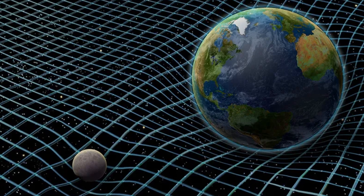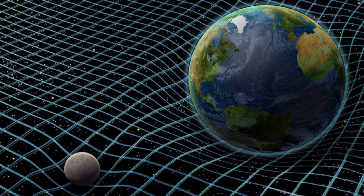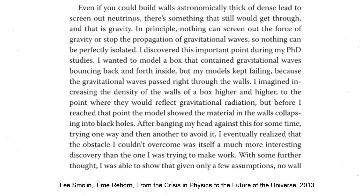There is no experimental evidence for gravitational shielding up to high precision, because large bodies such as the Moon and the Earth would partly shield their own gravitational attraction. During Lee Smolin's PhD in General Relativity, he found out and stated that in principle nothing can screen out the force of gravity or stop the propagation of gravitational waves, so nothing can be perfectly isolated. He attempted to model a box containing bouncing gravitational waves with walls that reflected gravitational radiation, but these walls had to have so much density that they collapsed into black holes.